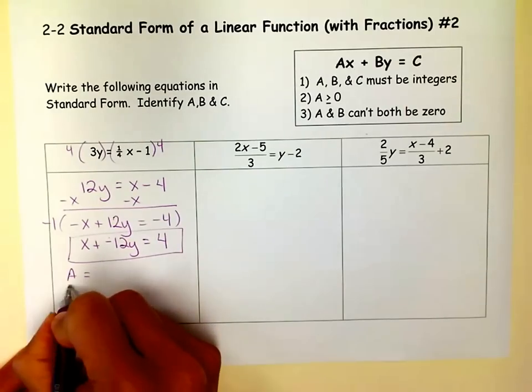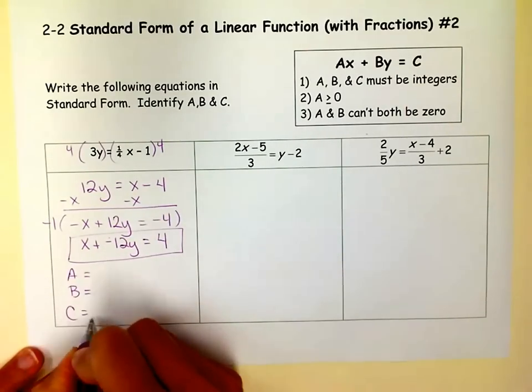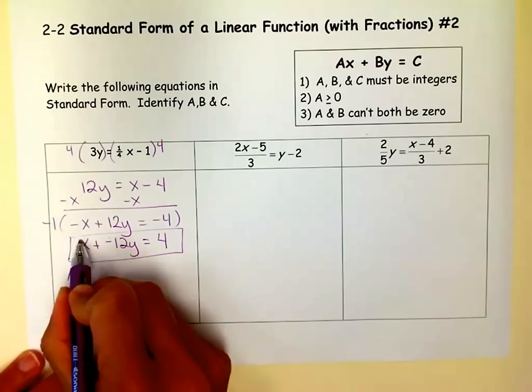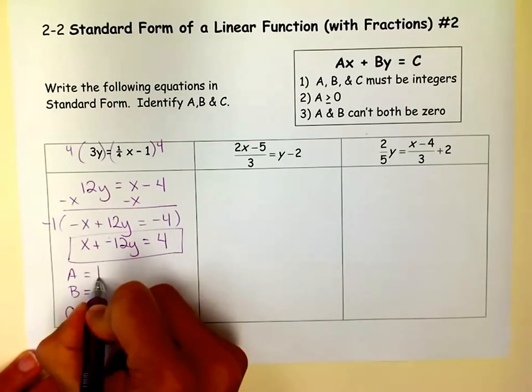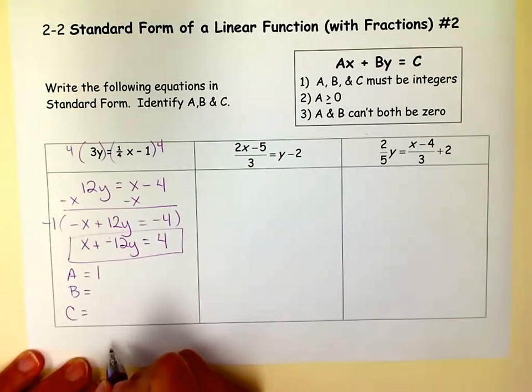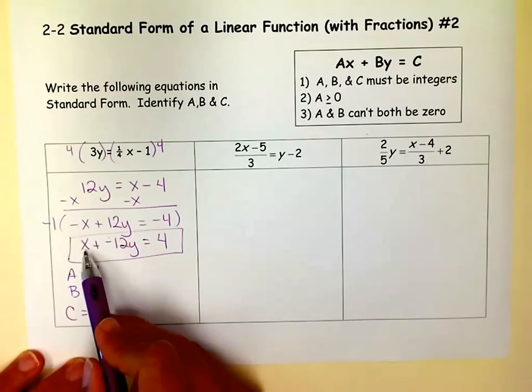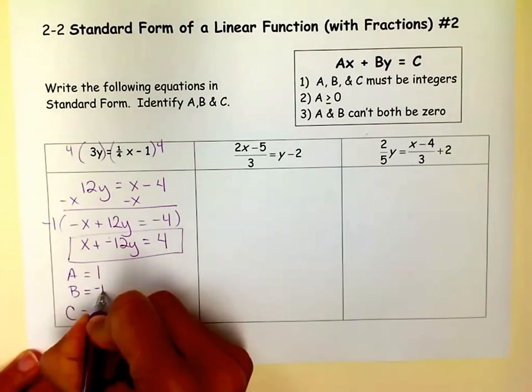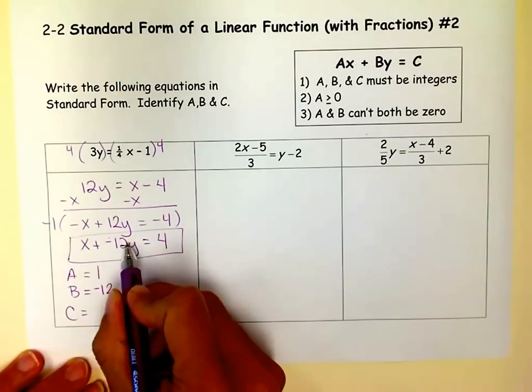But they also asked me to identify A, B, and C. Well, A is the coefficient, or the number in front of x. When there isn't one, I know it is 1. Because there's no other number that I could multiply by x to get x. That's the identity element.